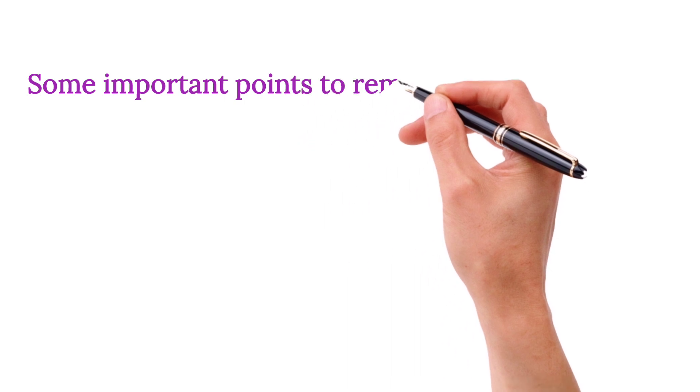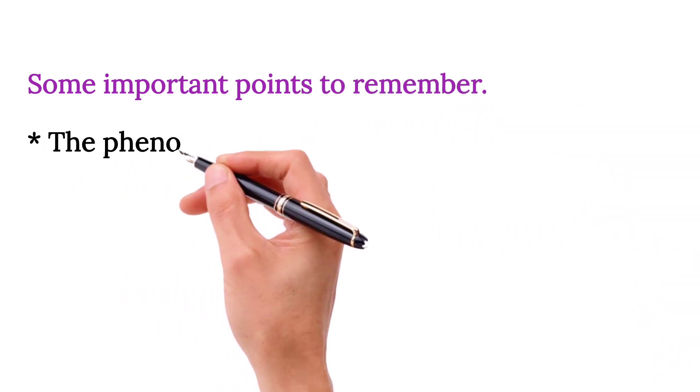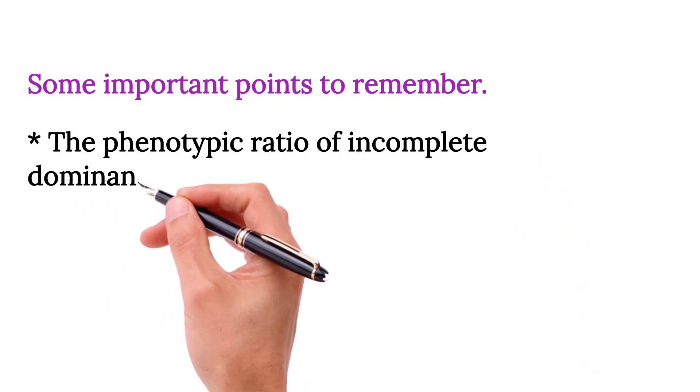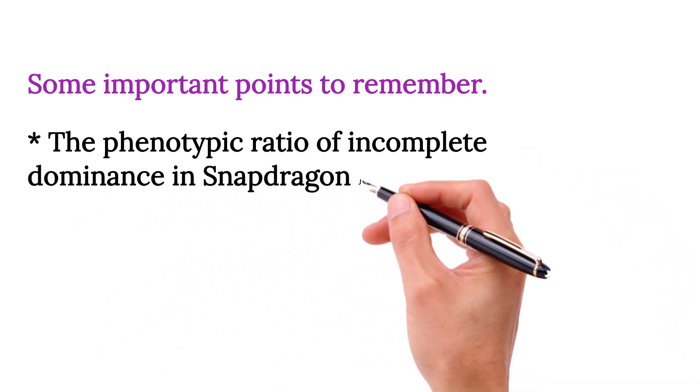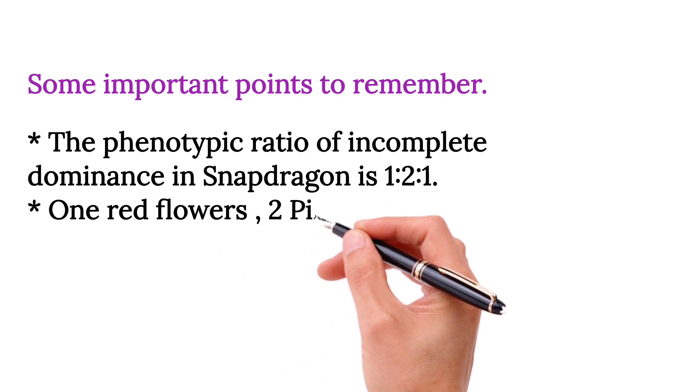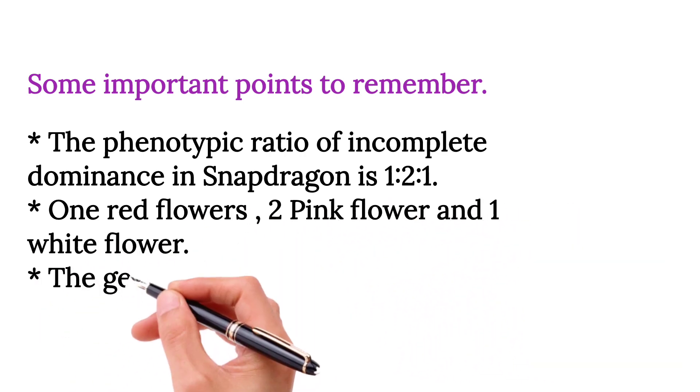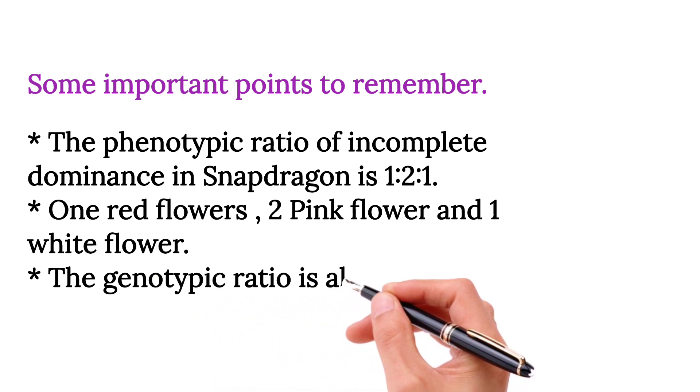Some important points to remember. The phenotypic ratio of incomplete dominance in snapdragon is 1 ratio 2 ratio 1, 1 red flower, 2 pink flower, and 1 white flower. The genotypic ratio is also 1 ratio 2 ratio 1.